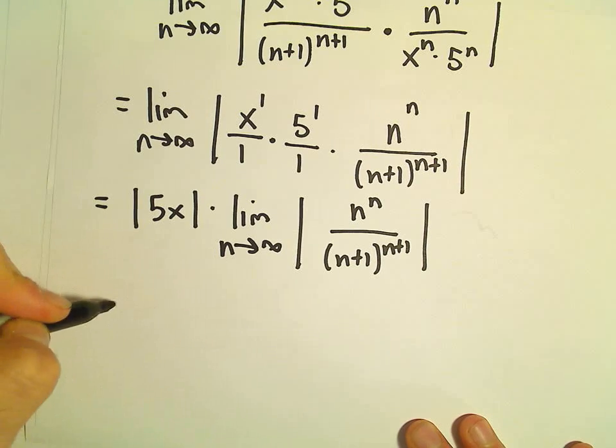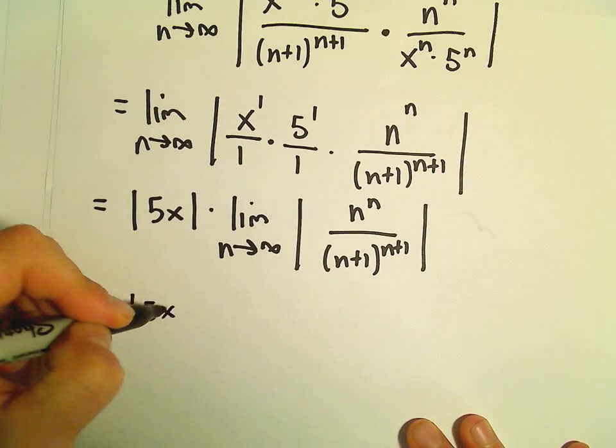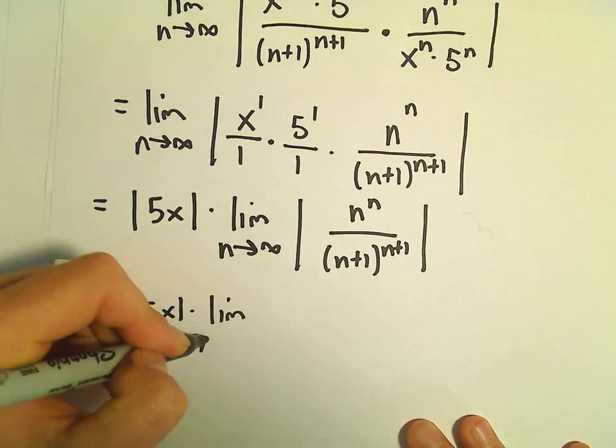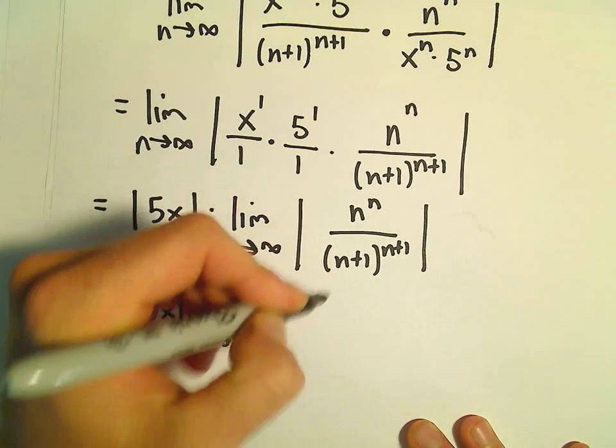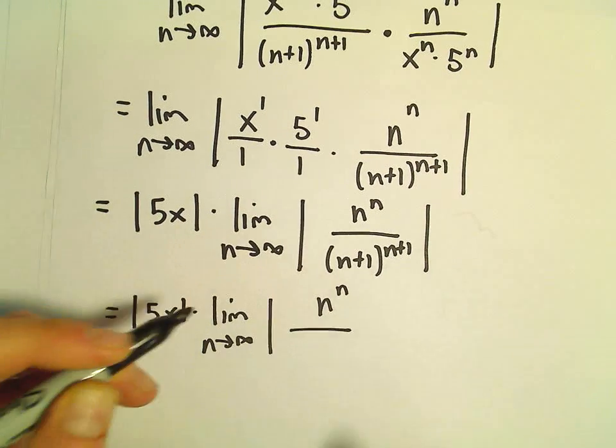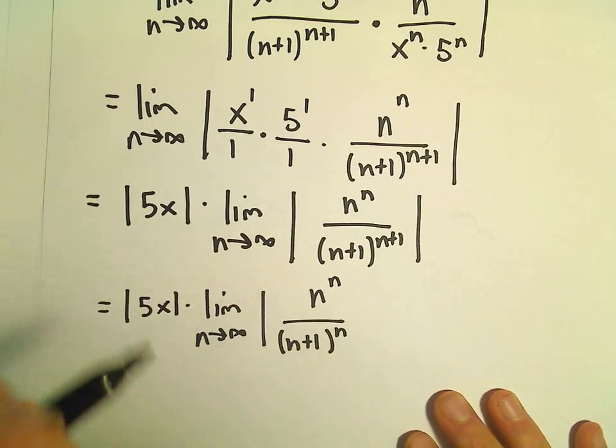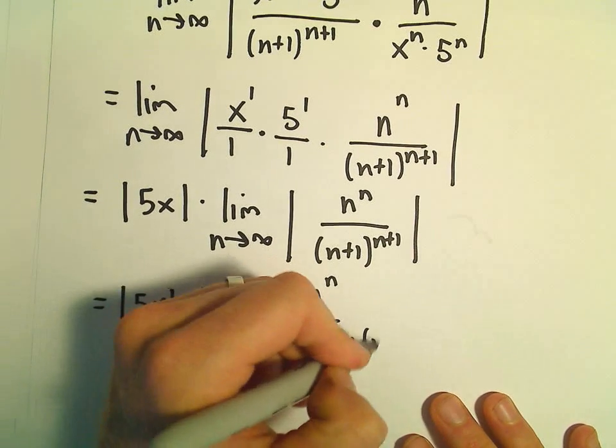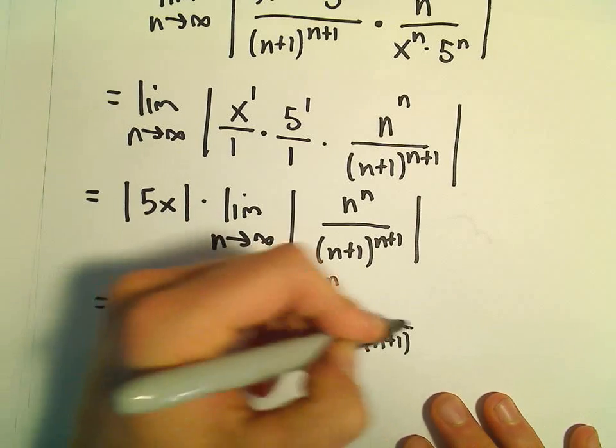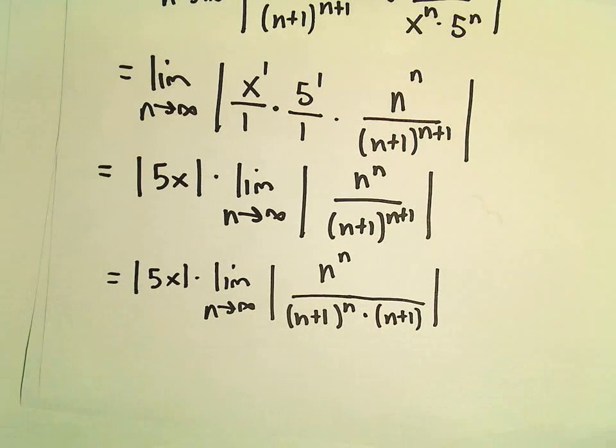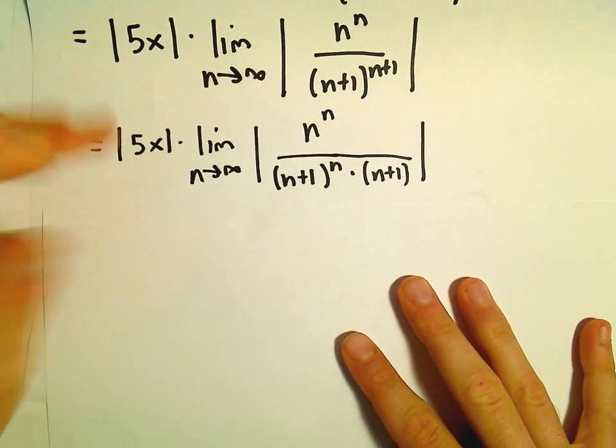Alright, so what I'm going to do is I think I'm going to break this up. So I notice these are both to the power, both involve exponents of n. So we could rewrite this as n plus 1 raised to the n times n plus 1.